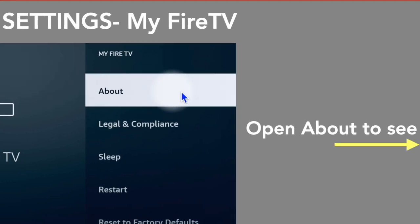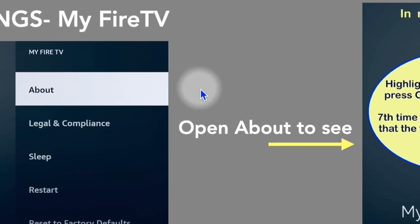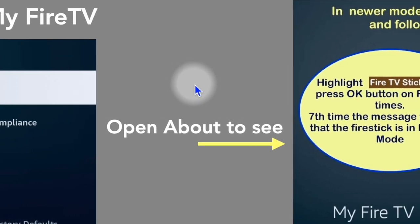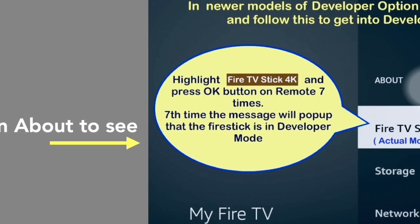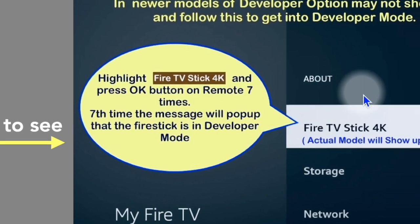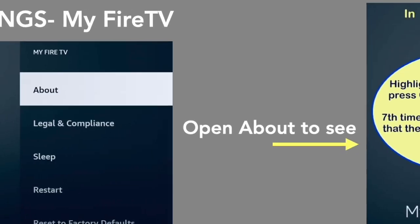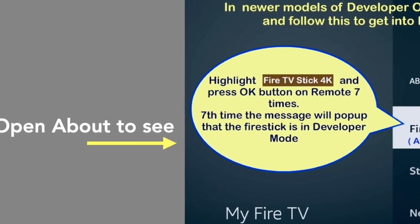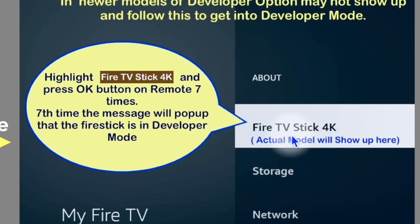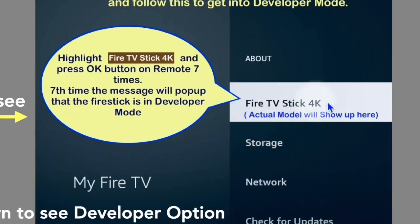On the new model, open Settings, open My Fire TV, and open the About tab at the top. The About page will display your Fire TV model at the top. Select that model name and press OK on the remote seven times.